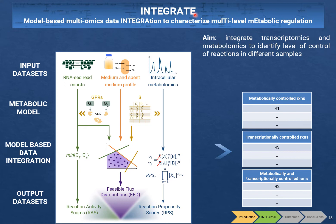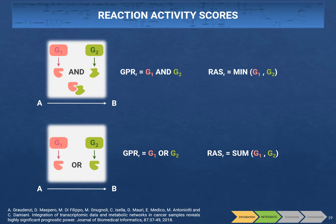Against this background, we propose the INTEGRATE pipeline, developed for integrating transcriptomics and metabolomics data to identify the level of control of reactions in different biological samples, exploiting transcriptomics data, exometabolomics and intracellular metabolomics, together with a generic metabolic model that includes GPR rules — logical expressions describing how gene products concur to catalyze associated reactions. The core process of this methodology consists of integrating the input datasets into the input metabolic model to obtain three reaction-oriented derived datasets.